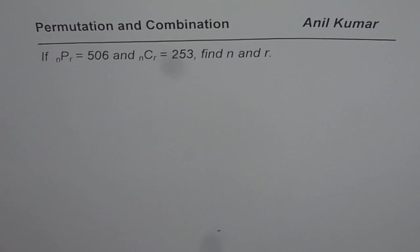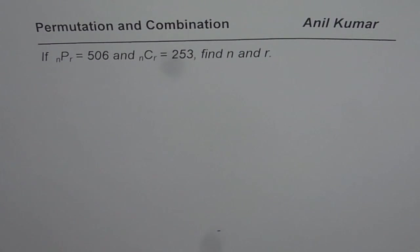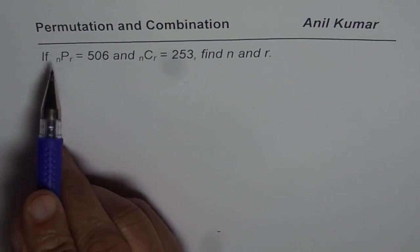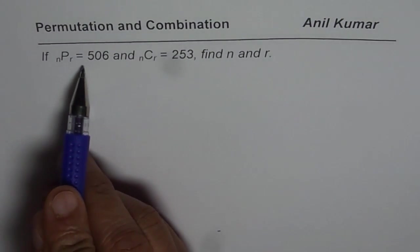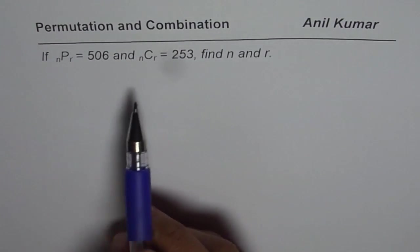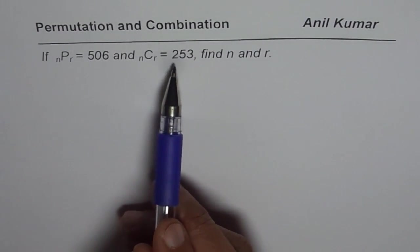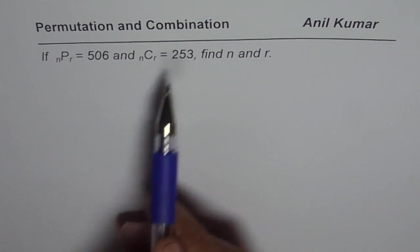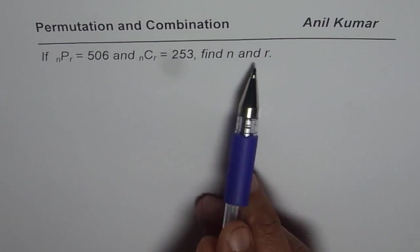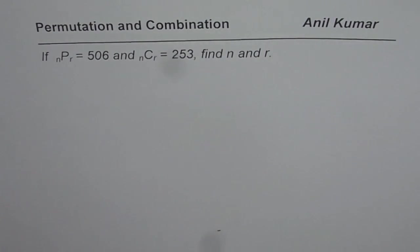I am Anil Kumar and now let us do some algebraic operations with permutation and combination. The question here is: if nPr equals 506 and nCr equals 253, find N and R.